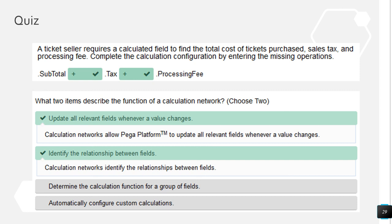A ticket seller requires a calculated field to find the total cost including sales tax and processing fee — basically an addition process where the subtotal is the total of processing fee and taxes. What two items describe the function of a calculation network? First, it identifies the relationship between fields; second, it automatically updates whenever there is a change in value. This is the end of this major portion — check out the Pega Challenges playlist to see how to do these calculations practically in App Studio. Thank you and have a great day ahead.